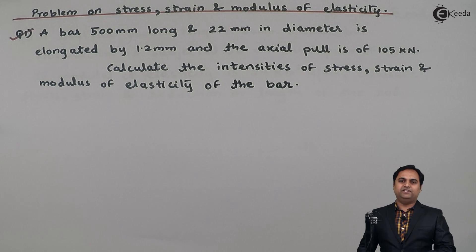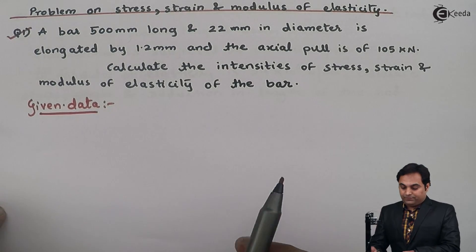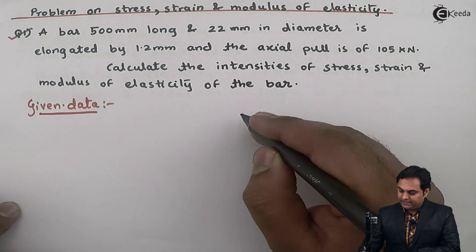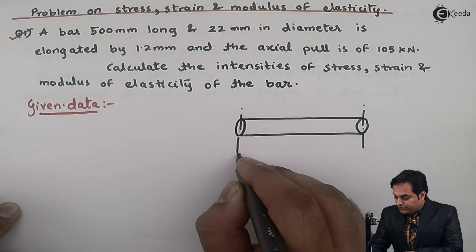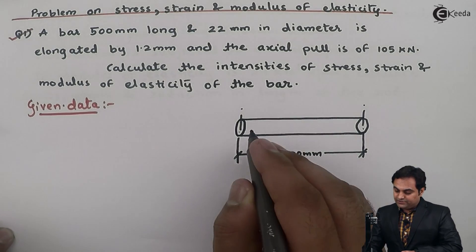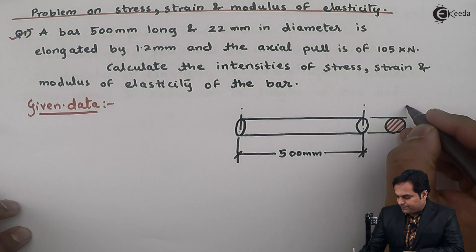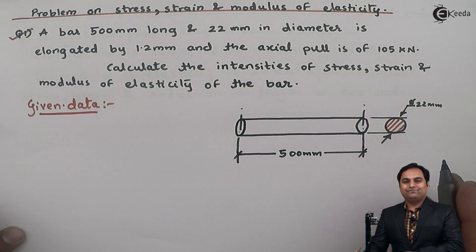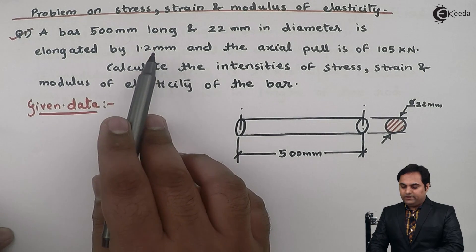First, whatever is given in the question, we will write that in the form of data. The bar is 500 mm long and 22 mm in diameter. I'll draw a diagram — here I have drawn a bar or rod whose length is 500 mm, and looking at the cross-section, the diameter is 22 mm.